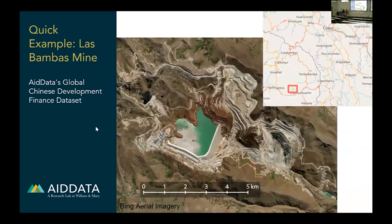Thank you, Sean. What you're looking at on screen is aerial imagery of a mine in Peru called Las Bambas. This mine provides about 2% of the world's copper supply and in any given year makes up about 1% of Peru's GDP, giving it huge national and international impact. It is one of AidData's many projects around the world. It began construction in 2012, began operations in 2015, and has been operating on and off since then due to significant local protests.